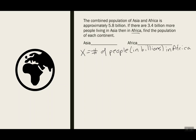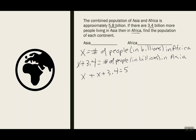By leaving it in billions, I'm not having to write all the zeros. So if I know how many people are in Africa, and I know there are 3.4 billion more, how do I show more? I do 3.4 plus x. So this will be the number of people, in billions, in Asia. That way I'm not having to write all the zeros, and that will just make this process a lot easier. How is this connected? I know that the total is 5.8. So if I add the number of people in Africa to the number of people in Asia, I should get 5.8.